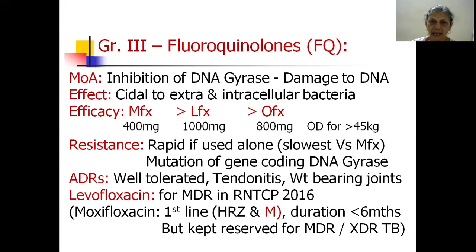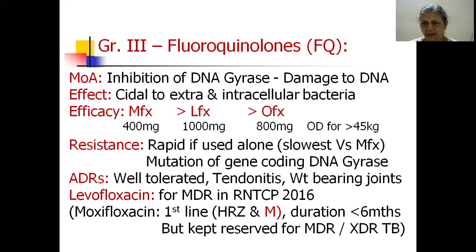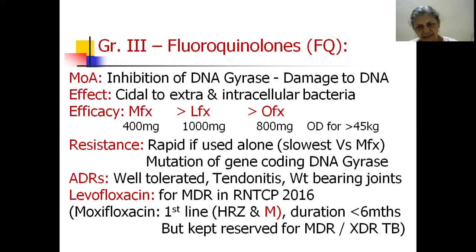Moxifloxacin has been tried elsewhere even as a first-line drug, replacing ethambutol. The combination of four bactericidal drugs — HRZM — allows reduction of treatment duration to less than six months. However, in India, it is kept reserved for multiple drug-resistant tuberculosis or extensive drug-resistant tuberculosis.